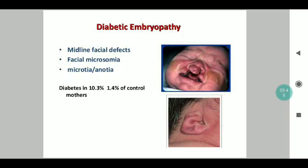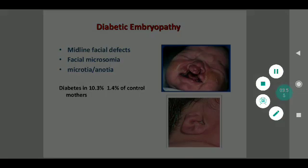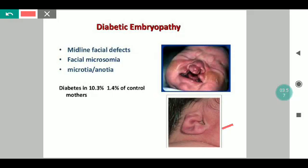Coming to diabetic embryopathy properly, some common defects include microtia or anotia — that is, ear lobe deformities, as seen in this image. Midline facial defects like cleft lip and cleft palate are quite common, and facial microsomia is also common. This image shows a cleft lip; the image does not show it, but a cleft palate is also present in that baby.